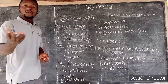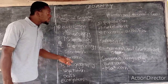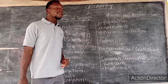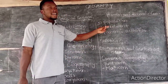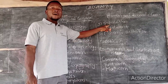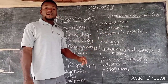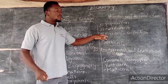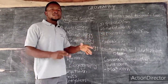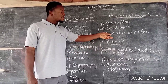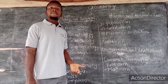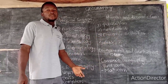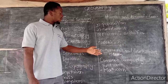On the other part, we have population, settlement, and economic activities. One question must always come from this section. It is somewhat complicated because you have to study transport, industries, and agriculture. It will depend on you — if you understand any of these topics very well, you just pick that question because it will be simple for you.